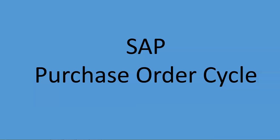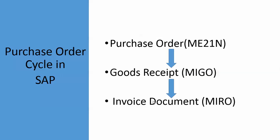Hello and welcome to all. In this video session we will learn about the SAP purchase order cycle. These are the steps in the purchase order cycle in SAP. First, we create a purchase order in ME21N transaction code. We then transmit this purchase order to our vendor.